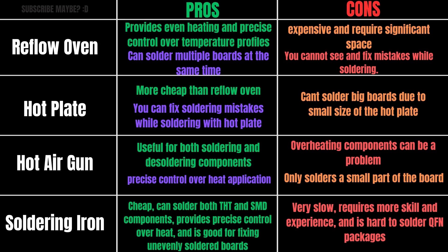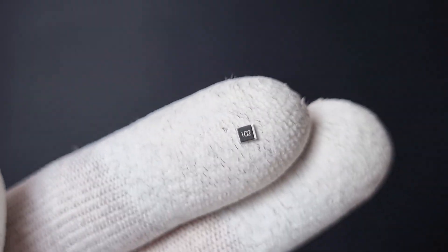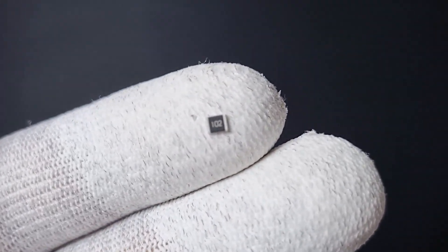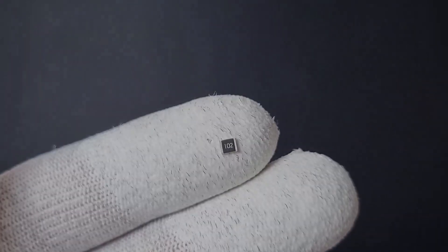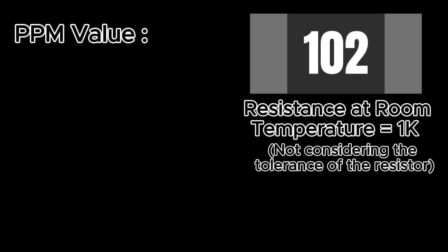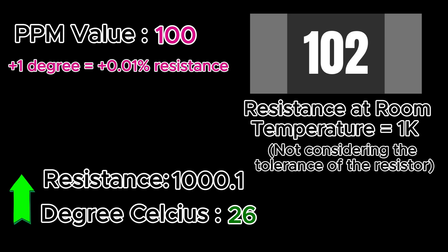Each method has its own pros and cons, but I won't dive into those now because this video is focused on resistors, not soldering techniques. Now let's delve into the PPM values of resistors, which are crucial for understanding how a resistor's resistance changes with temperature. If a resistor is rated with a PPM value of 100, it indicates that for every degree Celsius increase in temperature, the resistance of the resistor will change by 0.01 percent.